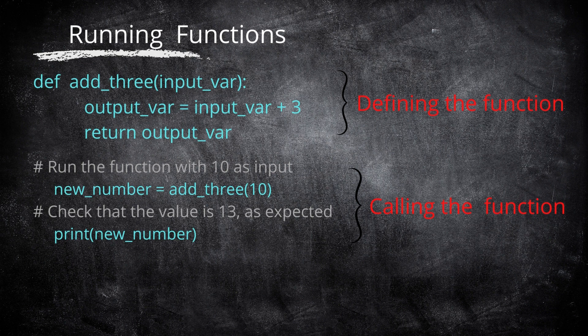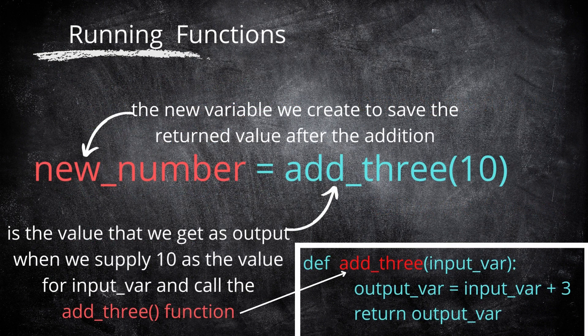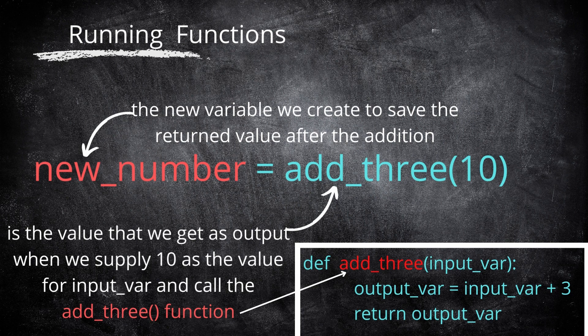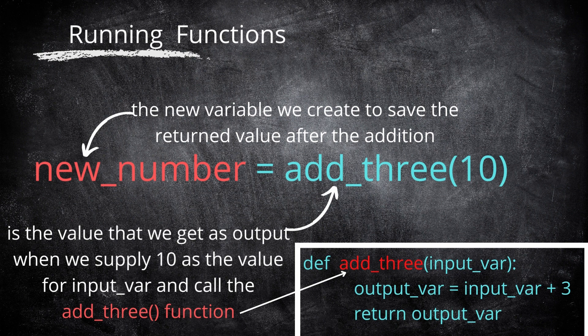Let us look at the code above in more detail. add_3(10) as displayed above is the value that we get as output when we supply 10 as the value for input_var and call the add3 function.